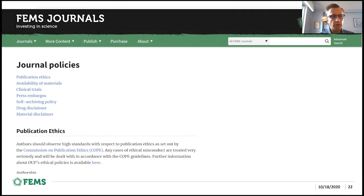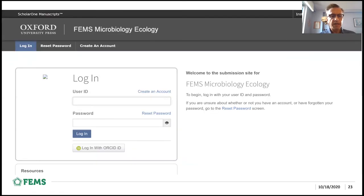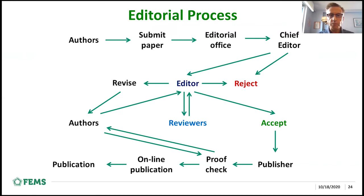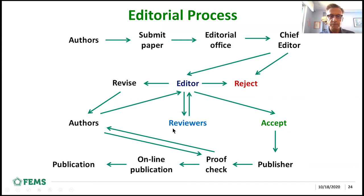Again, before submission, go back to the journal policies, publication ethics, and how you ensure that materials are available. Then follow the process for online submission. After submitting your paper, it goes to the editorial office for an initial check, then to the chief editor who assigns it to an editor, who will then assign it to external peer reviewers who provide feedback. The editor then makes a decision to either reject your article, ask for revision, or hopefully eventually accept your paper, so it gets sent to the publisher for final proof check and then publication.